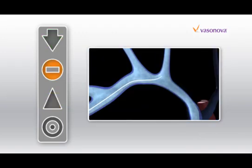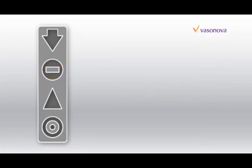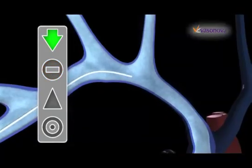The orange do not enter sign indicates the catheter is moving against blood flow and away from the heart, or has passed the lower one-third of the superior vena cava and is going into the right atrium.